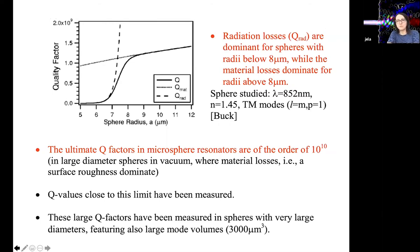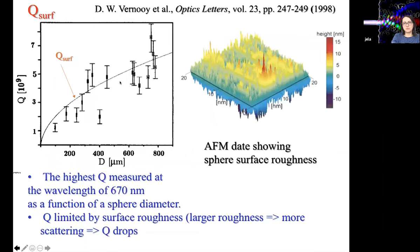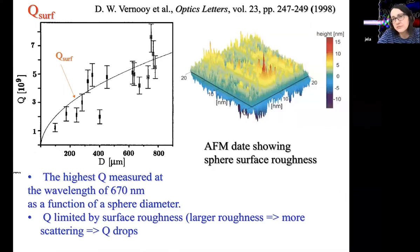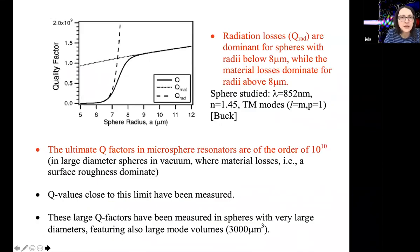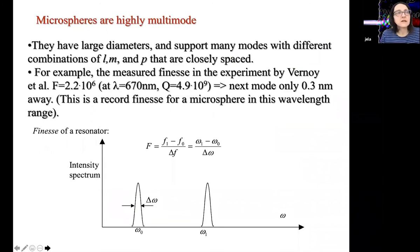The highest Q factor spheres had diameters of a few hundred microns. In that regime, radiative loss is not limiting. They were in vacuum, so there was no issue with water absorption, and absorption loss was also not limiting — it was basically limited just by surface scattering because of imperfections. Despite using melting of glass rather than etching, there are always surface inhomogeneities on the order of nanometers that eventually matter.